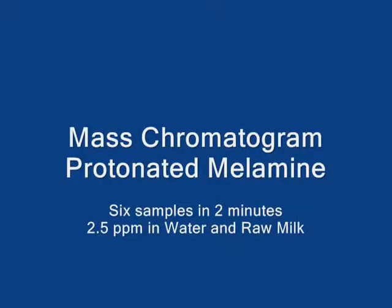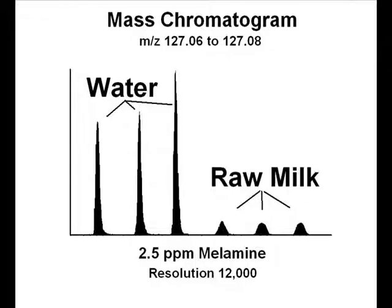The mass chromatograms show the effect of milk versus water. While some loss of signal is due to the matrix of the milk, it is still evident that we can detect above the regulatory limit of 2.5 parts per million.